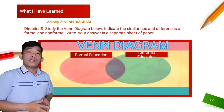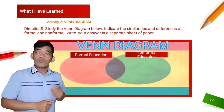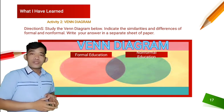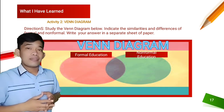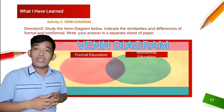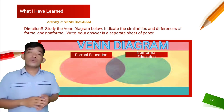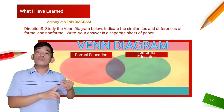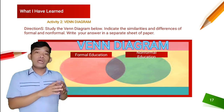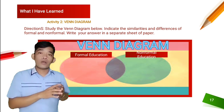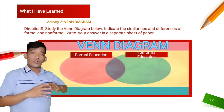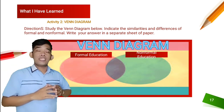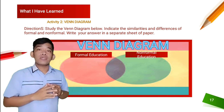Many of you are already familiar with a Venn diagram, as it is one of the common activities encountered in some lessons. For this activity, we have non-formal and formal education. You are going to write down the similarities and differences between non-formal and formal education using the Venn diagram. Write your answer on a separate sheet of paper and don't forget to include it in your answer sheet and submit it on our next retrieval day.